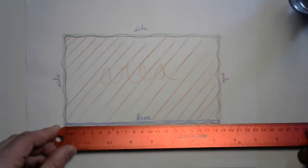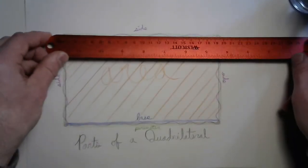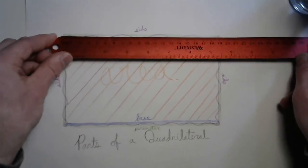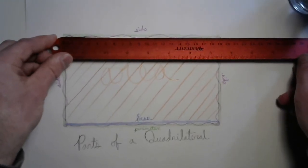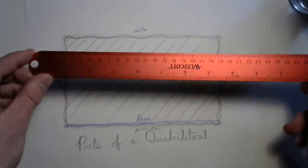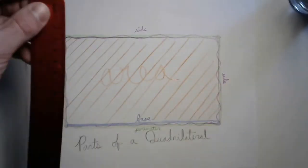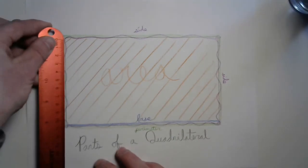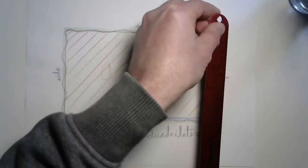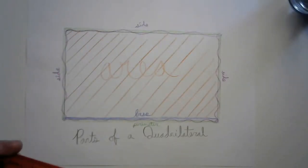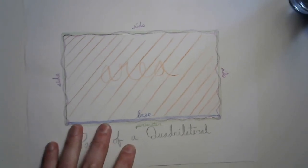I can actually find the perimeter of this rectangle because I have my trusty ruler. I can do it in metric: 18 and a half that way, 18 and a half that way. So that's 37, and 11 and 11 is 22. What an amazing perimeter — I bet you can figure that one out.